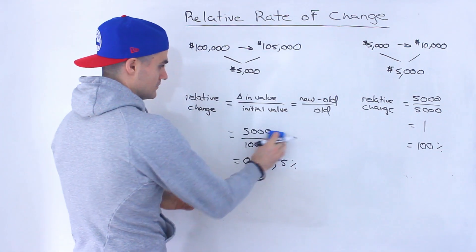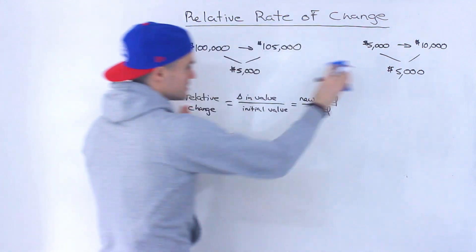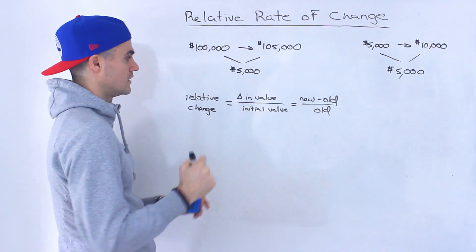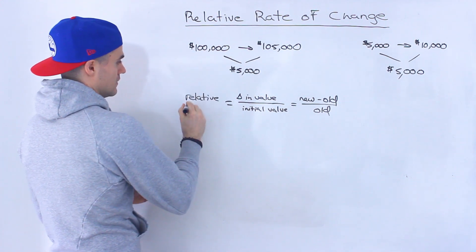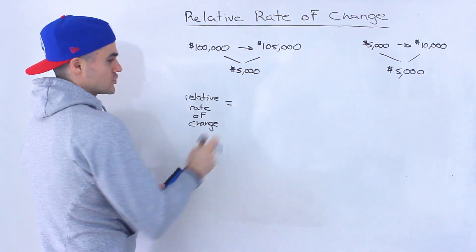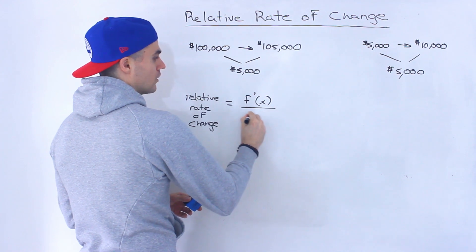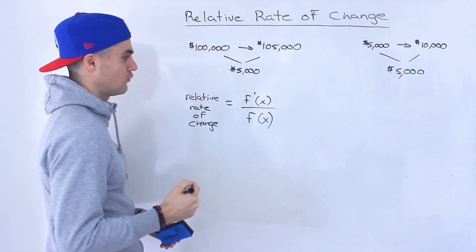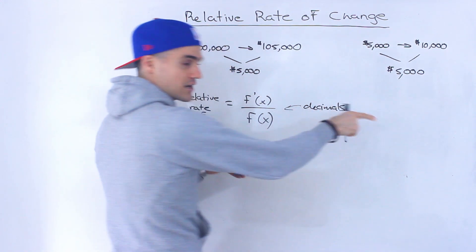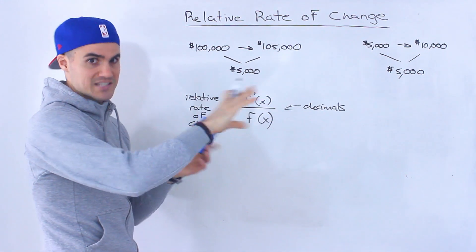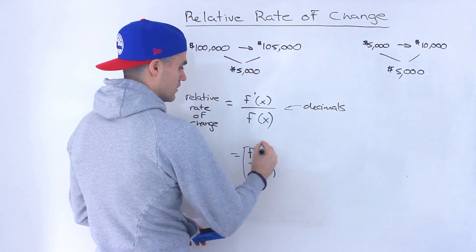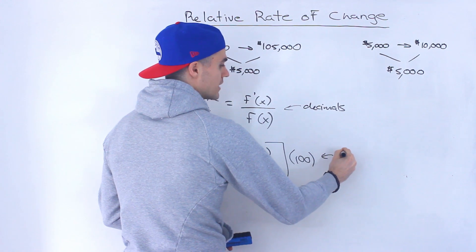Now when we take this formula and apply it to functions — because those were specific scenarios with numbers — what if we apply it to a function? If we wanted to know not just the change in the function, but the relative change in the function, it's actually called the relative rate of change. The relative rate of change of a function is basically its derivative over the function at some specific value for x. This gives it to you in decimals. If you want the percentage rate of change, you multiply that decimal value by 100.